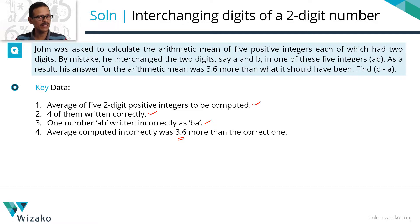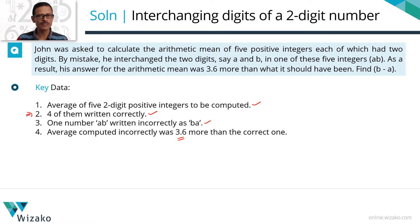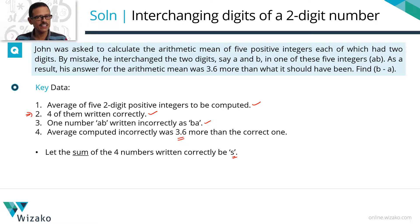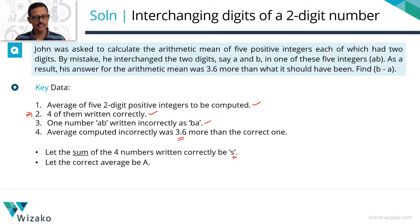I'm going to assign two variables. The first variable is the sum of the four numbers that he wrote correctly — giving a variable for the sum, not the average. Let that sum be equal to S. The second variable: let the correct average, if the number had been AB, be equal to A.